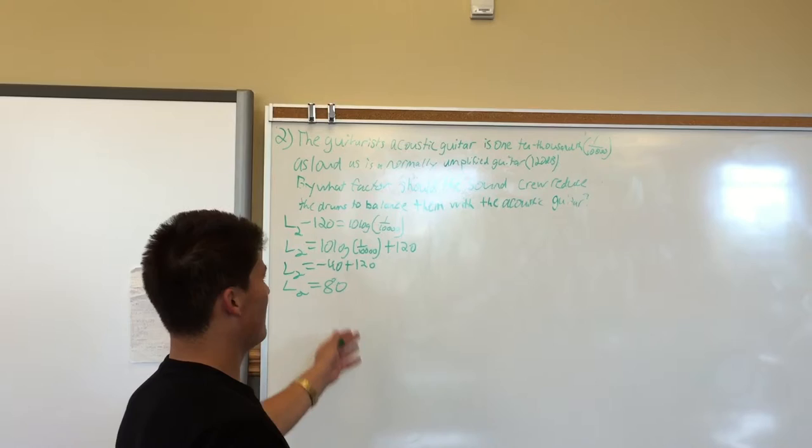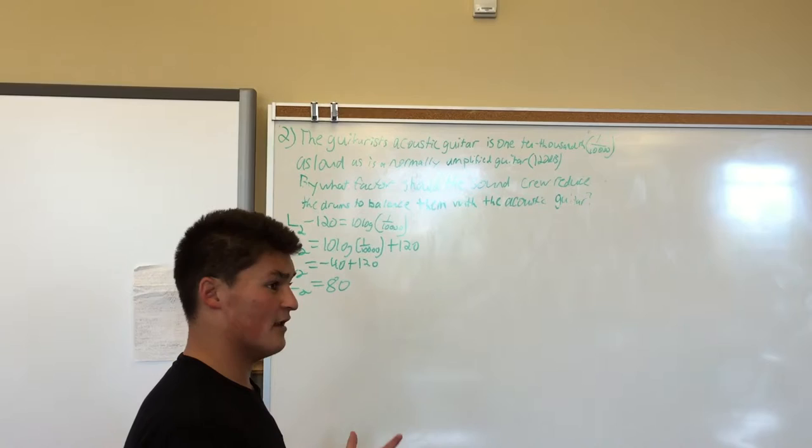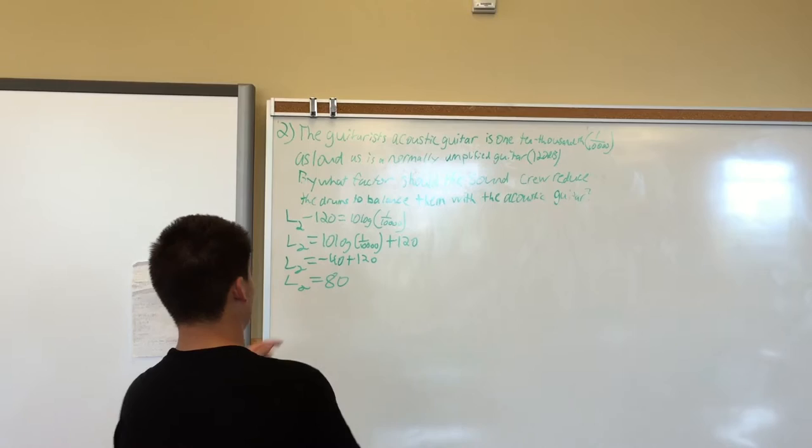From here what we need to do is find out by how much should the sound crew reduce the drums to balance them with the acoustic guitar. We don't have a ratio for that, so what we need to do is find the ratio between the drums and the acoustic guitar.